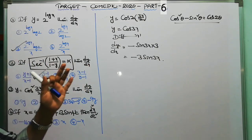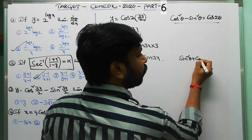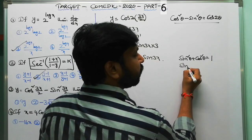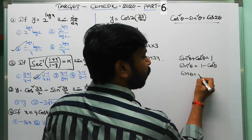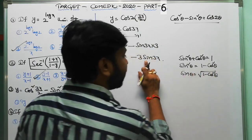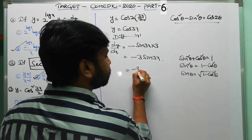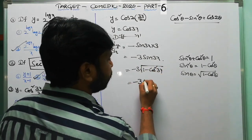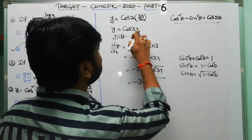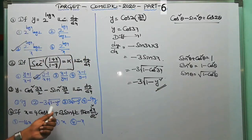Using the trigonometric identity sin²θ + cos²θ = 1, we get sin²θ = 1 − cos²θ, so sin 3x equals √(1 − cos²3x). Therefore dy/dx equals −3√(1 − cos²3x). Since y = cos 3x, cos 3x is y, so cos²3x is y². The answer is −3√(1 − y²). The second option is the correct answer.